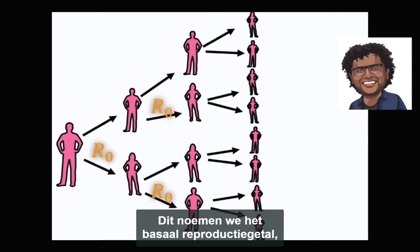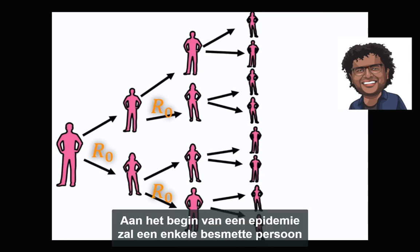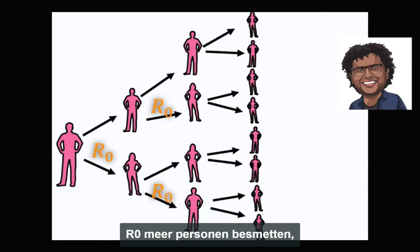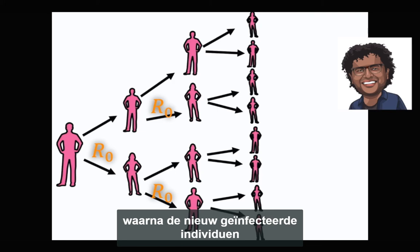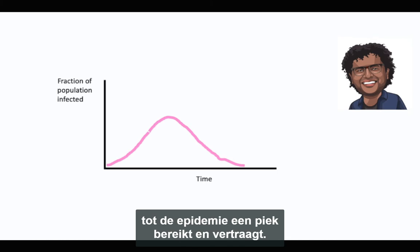This is referred to as the basic reproduction number, also known as R0. At the start of an epidemic, a single infected individual will infect R0 more individuals, after which the newly infected individuals will also infect R0 more individuals, until the epidemic reaches a peak and slows down.